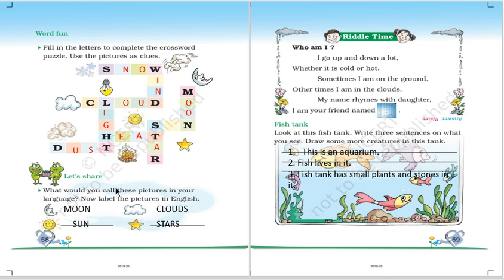Let's share what you will call these pictures in your own language, in your mother tongue. Now label the pictures in English. I have written here moon, sun, cloud and stars. It is very easy and you can easily identify it.